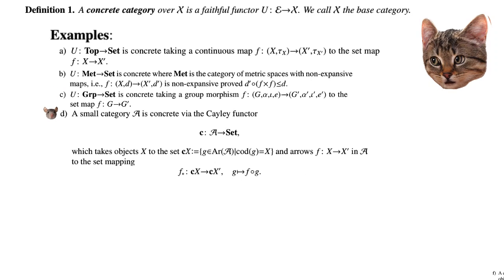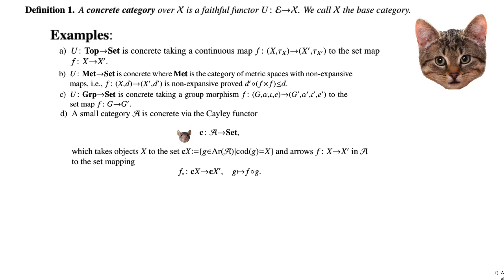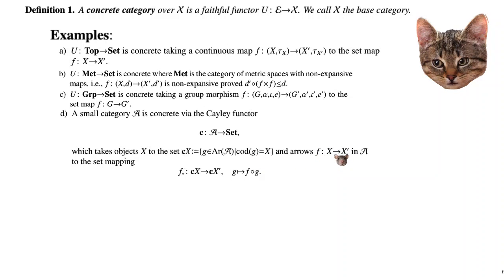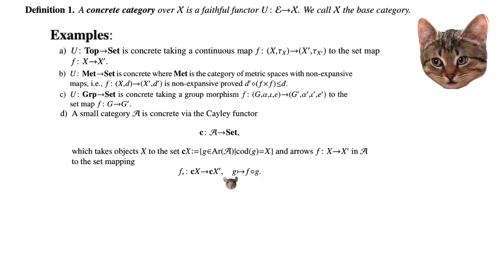We also have that every small category A is concrete via the Cayley functor C: A → Set, which takes objects in A to the set C(x) given by all those arrows in A whose codomain is x, and it takes arrows f: x → x-prime to post-composition, so it takes an arrow g with codomain x and post-composes f onto it.